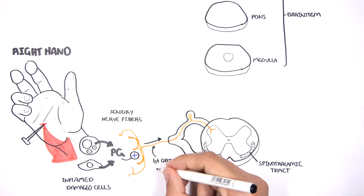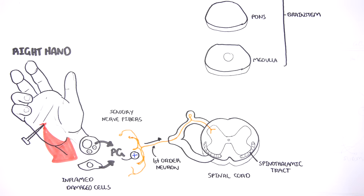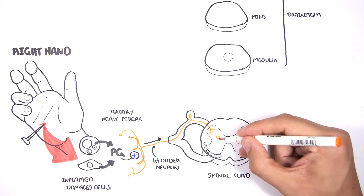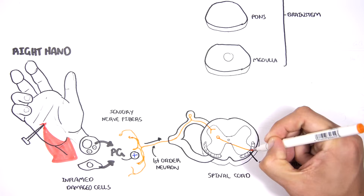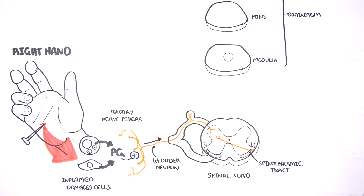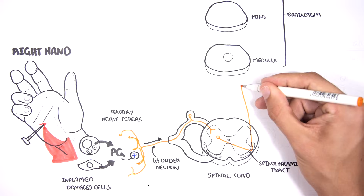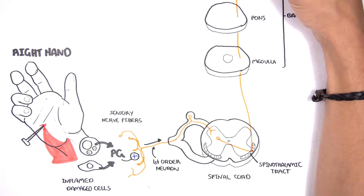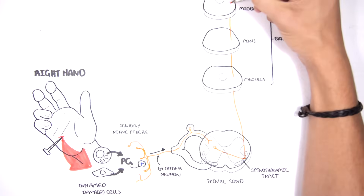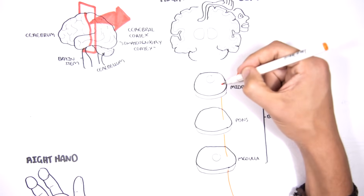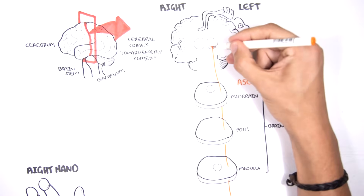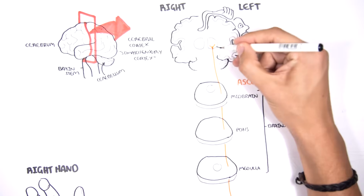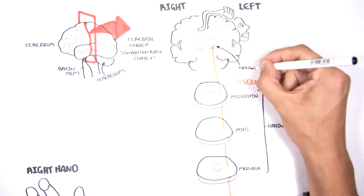This neuron is a first-order neuron. Within the dorsal horn of the spinal cord, the first-order neuron will synapse and relay this signal to the second-order neuron. The second-order neuron will cross over to the opposite side and enter the spinothalamic tract. From here, the second-order neuron will continue ascending through the remaining spinal cord, through the brainstem, and terminate in the thalamus of the brain.